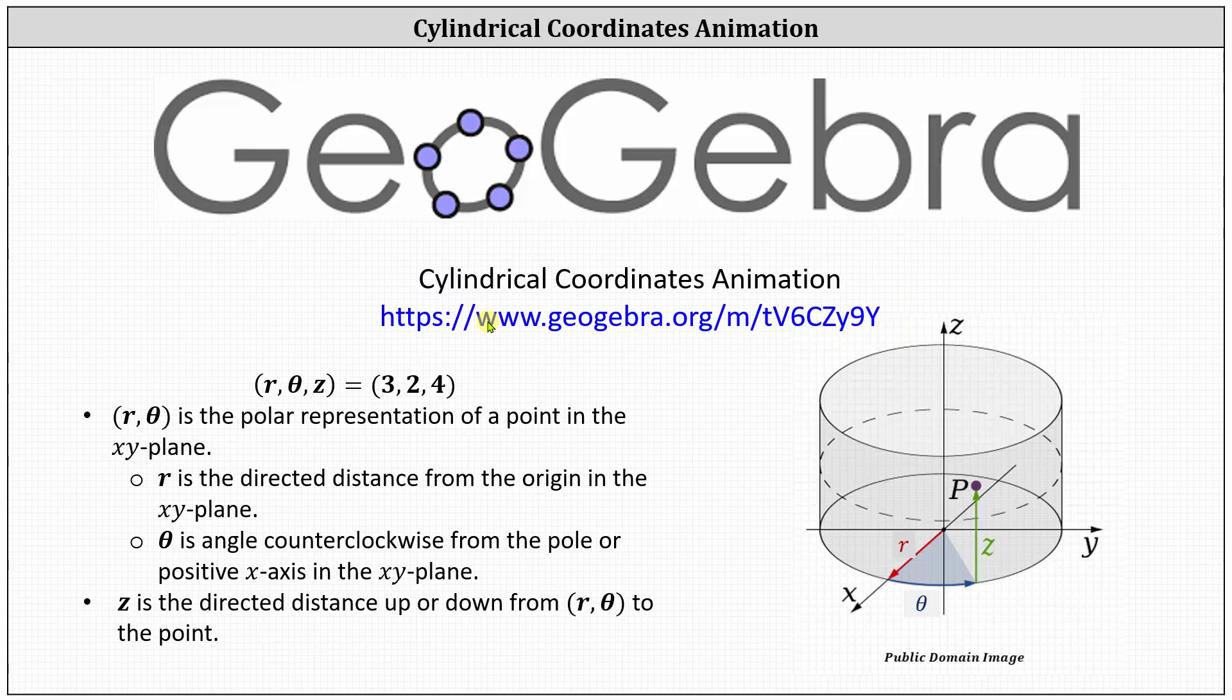An ordered triple in cylindrical coordinates is r comma theta comma z, where r comma theta is the polar representation of a point in the xy-plane. This means r is the directed distance from the origin in the xy-plane. If we take a look at the graph on the right for point P, r is this red distance here.